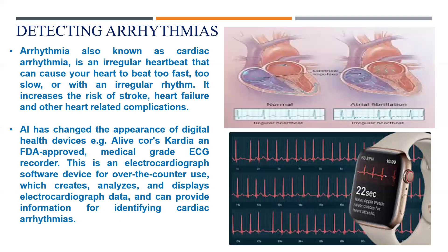Another example is detecting cardiac arrhythmias — an irregular heartbeat that can cause the heart to beat too fast, too slow, or with an irregular rhythm, increasing the risk of stroke, heart failure, and other complications. An AI-based medical-grade ECG recorder is already FDA-approved for over-the-counter use; it analyzes and displays electrocardiograph data and can identify cardiac arrhythmias, available as a wristband.